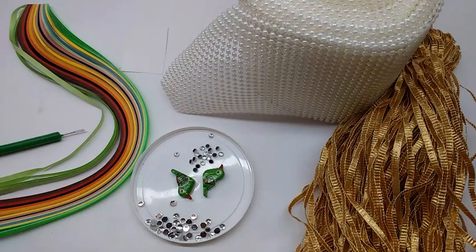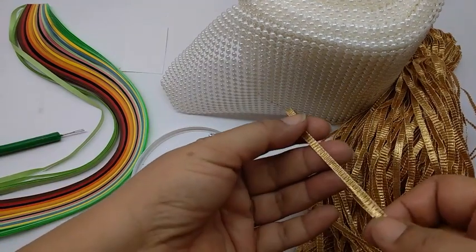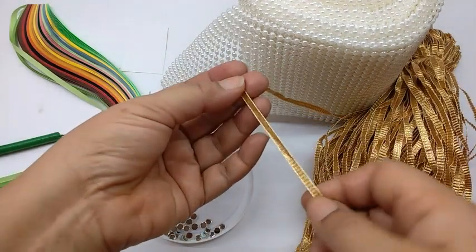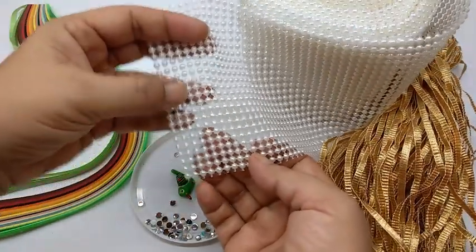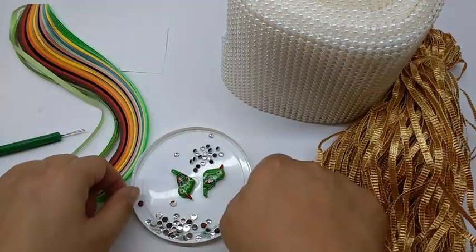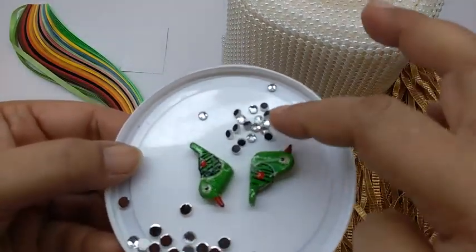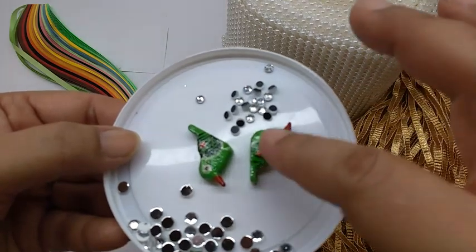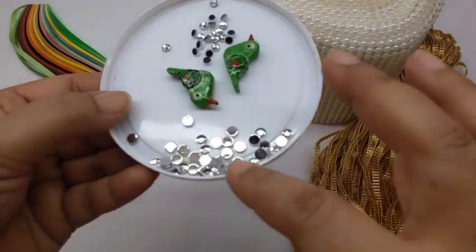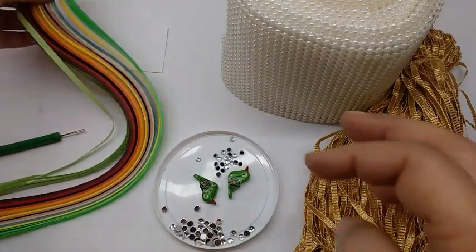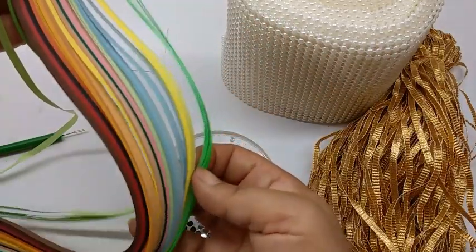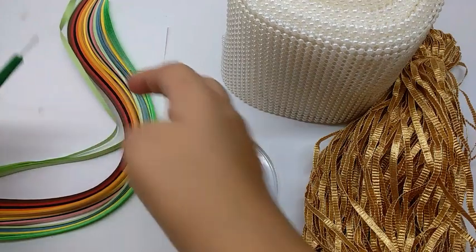Materials required are this golden gotha or thread, whatever kind you want to use. You can use a ribbon also. This is a lace of beads. These are some studs, smaller studs, a couple of parrots, and slightly bigger studs. And these are paper strips for quilling with a tool.